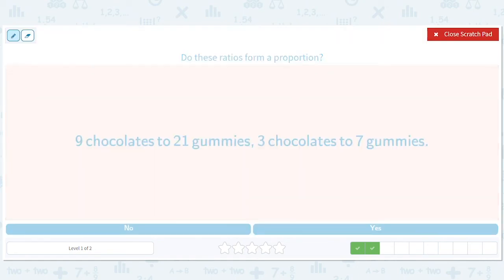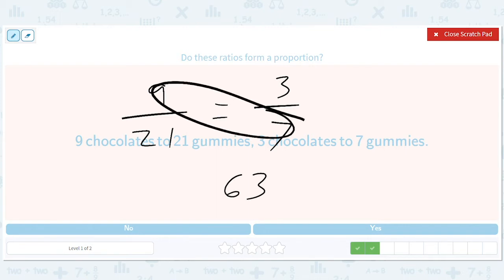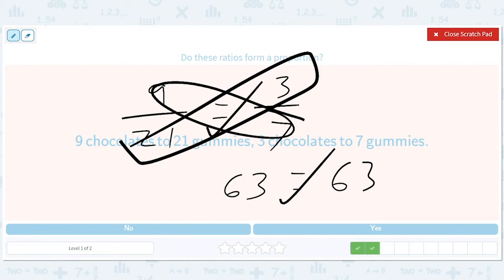Nine chocolates to 21 gummies equals three chocolates to seven gummies. Okay. So we can do nine times seven is 63, 21 times three is 63. Okay. Those are equal, right? So we are in proportion there.